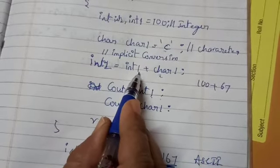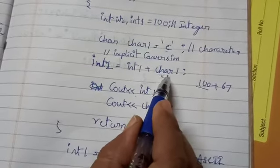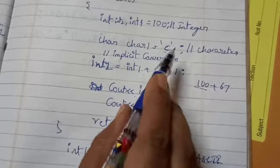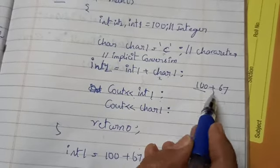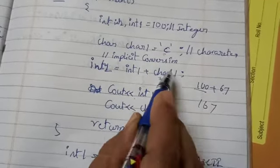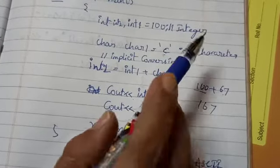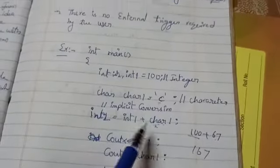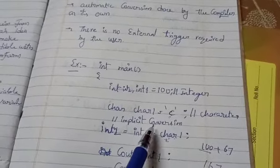What is the value in integer 1? 100. What is the ASCII value for C? 67. If you add this, 167 we will get. Who will do this performance? Compiler will do this performance. This is called implicit conversion.